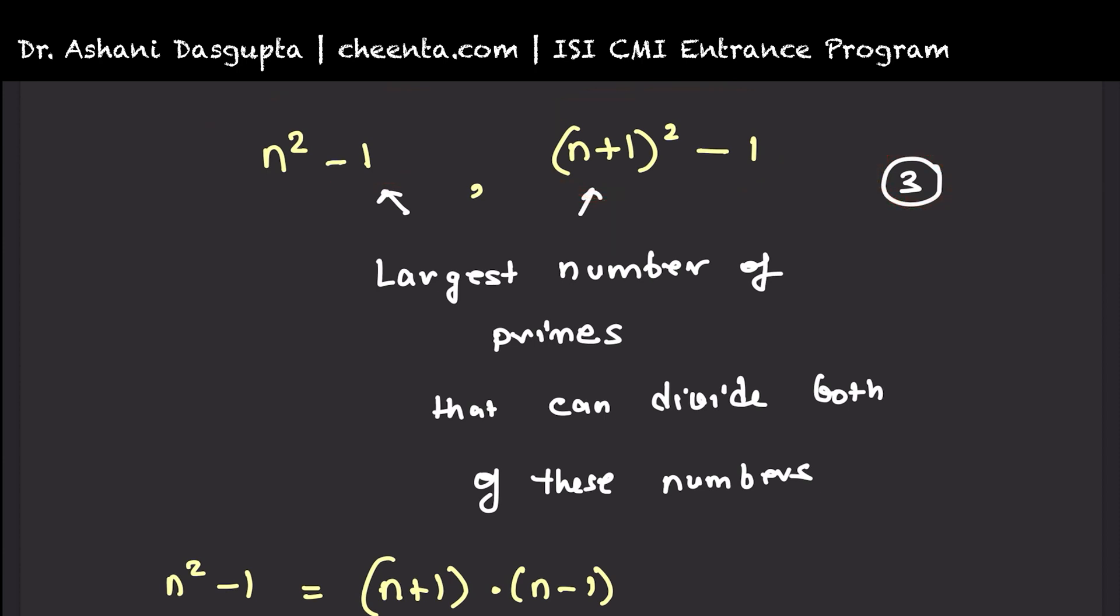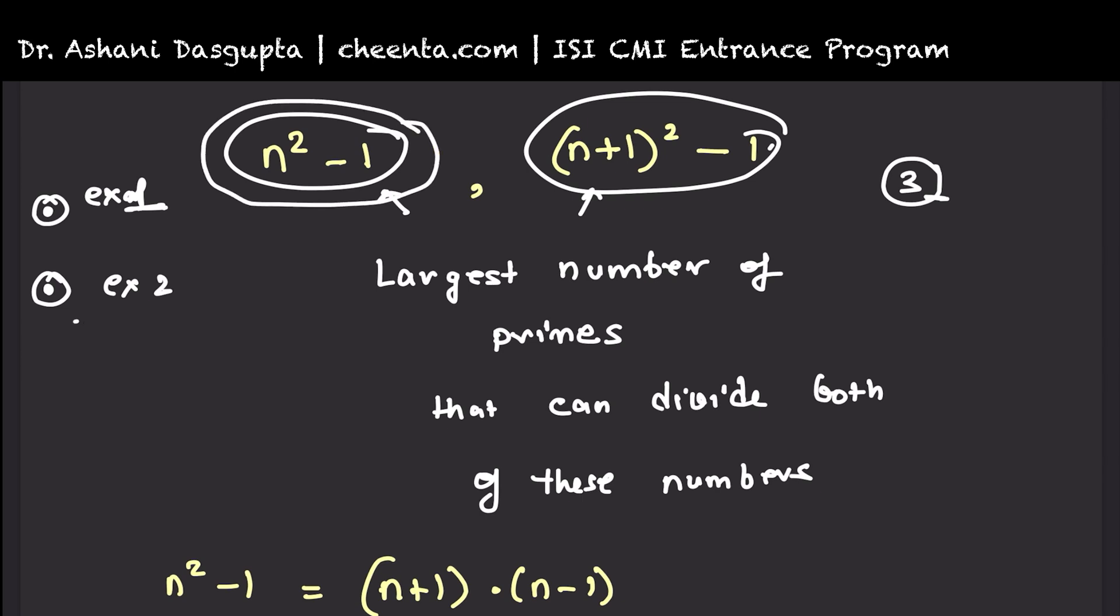Can you give me two examples? Example 1 should be a value of n for which both of these numbers are divisible by 3. Example 2 is a case of a natural number n for which both of these numbers are not divisible by 3, which means they are co-prime to each other. Think about it, put a comment in the description and I will see you in the next video.